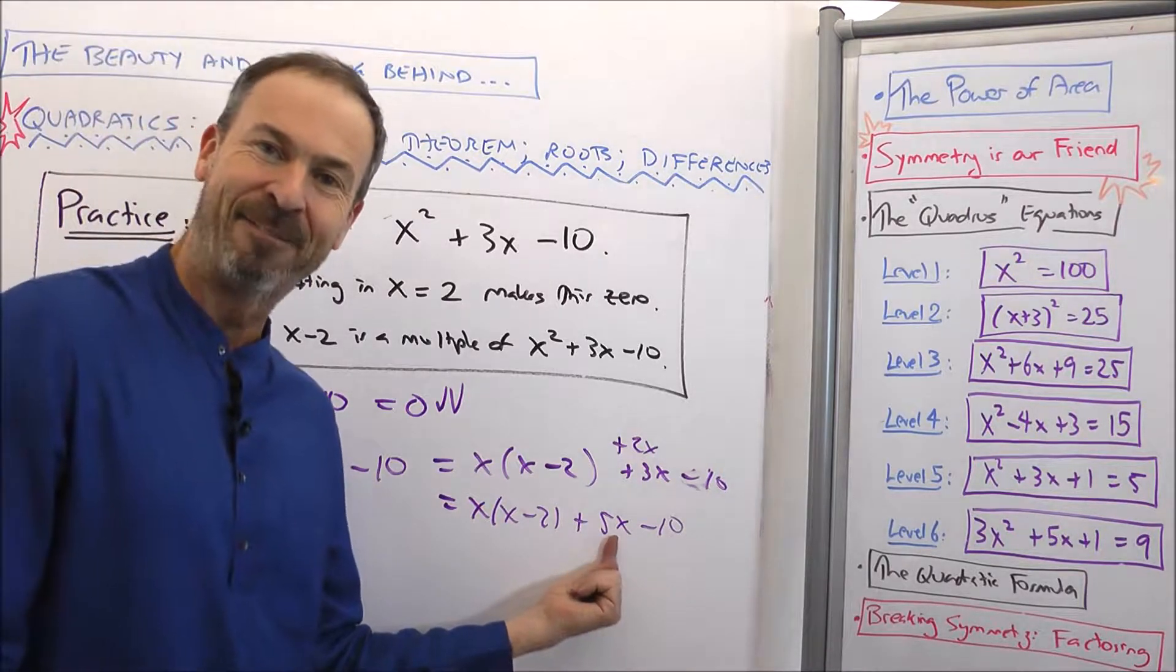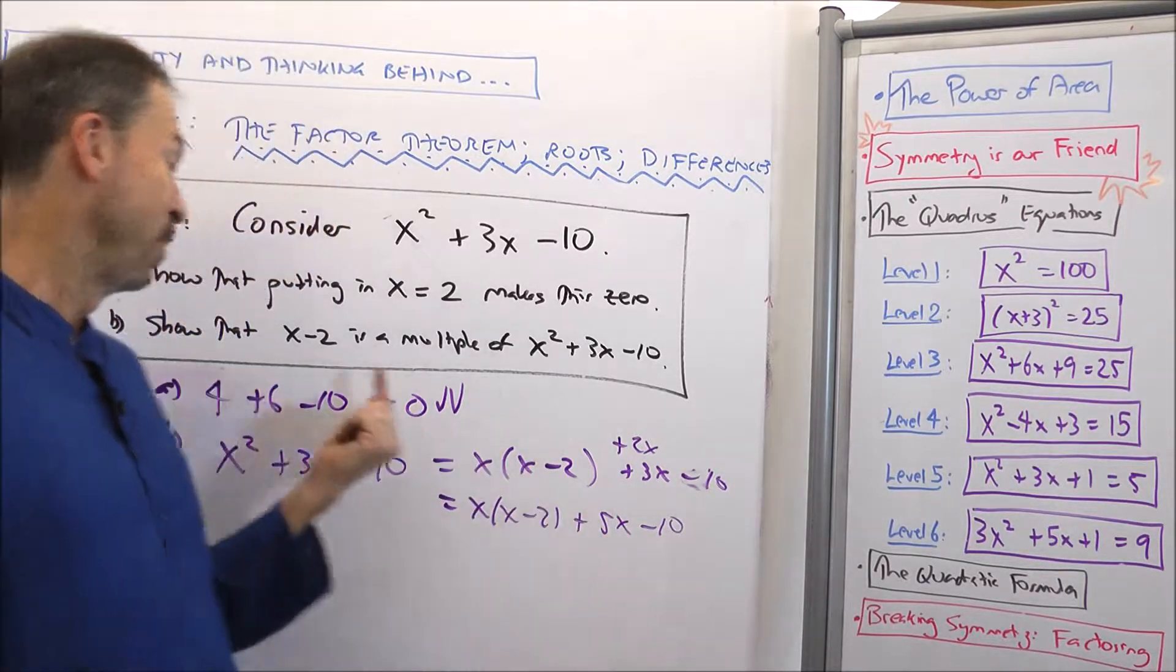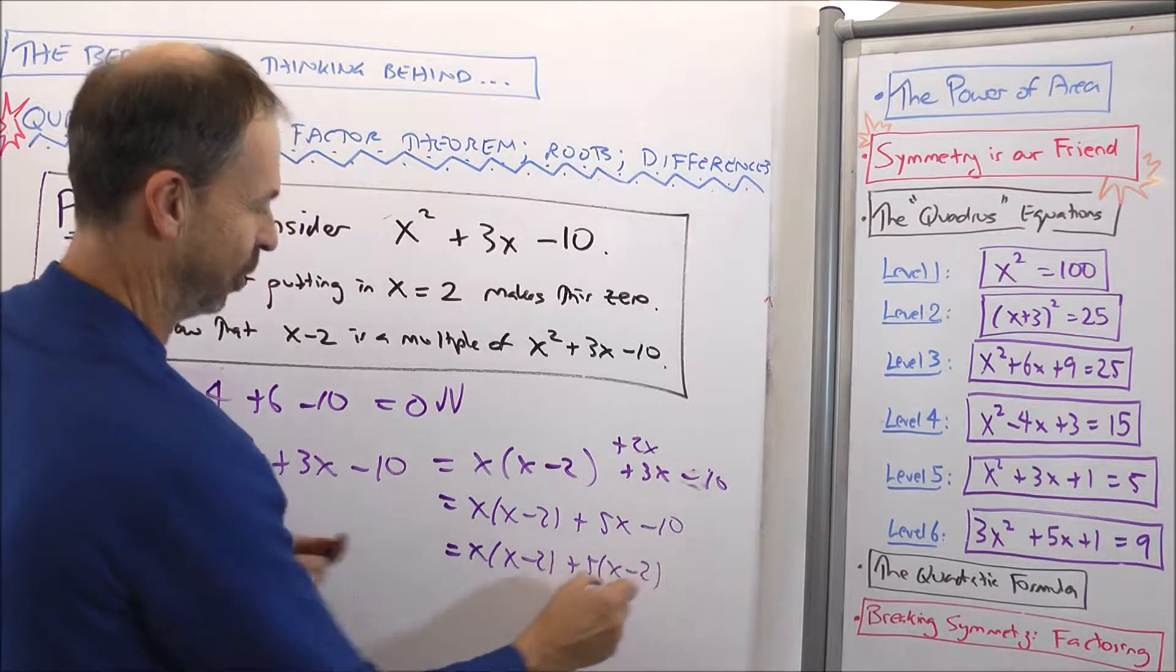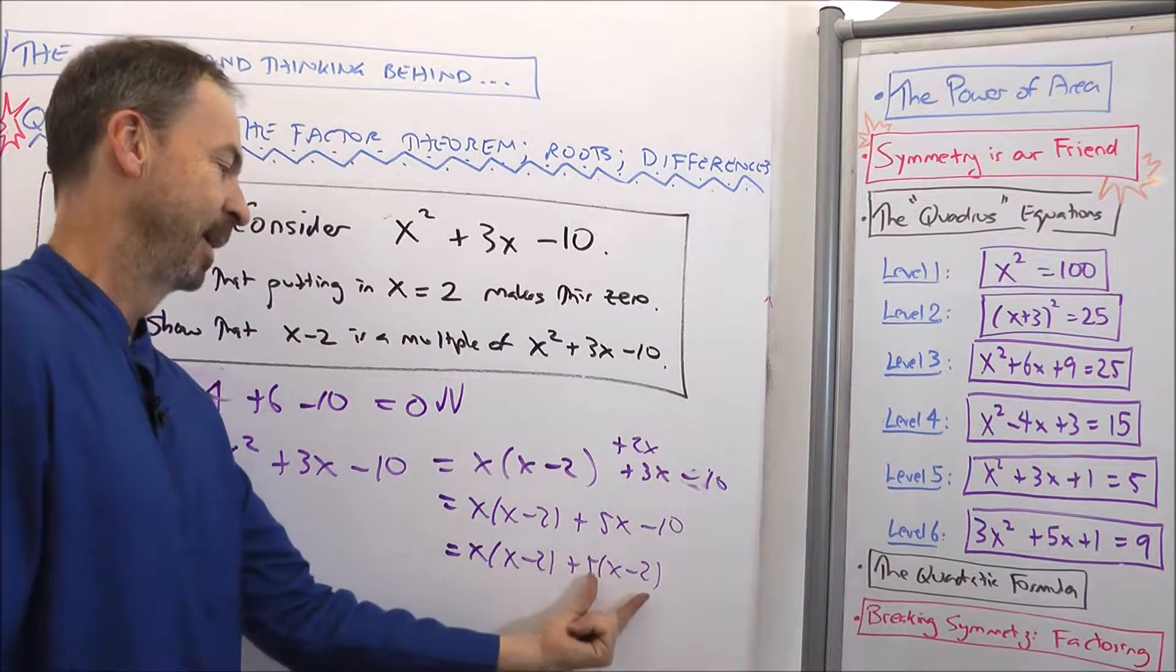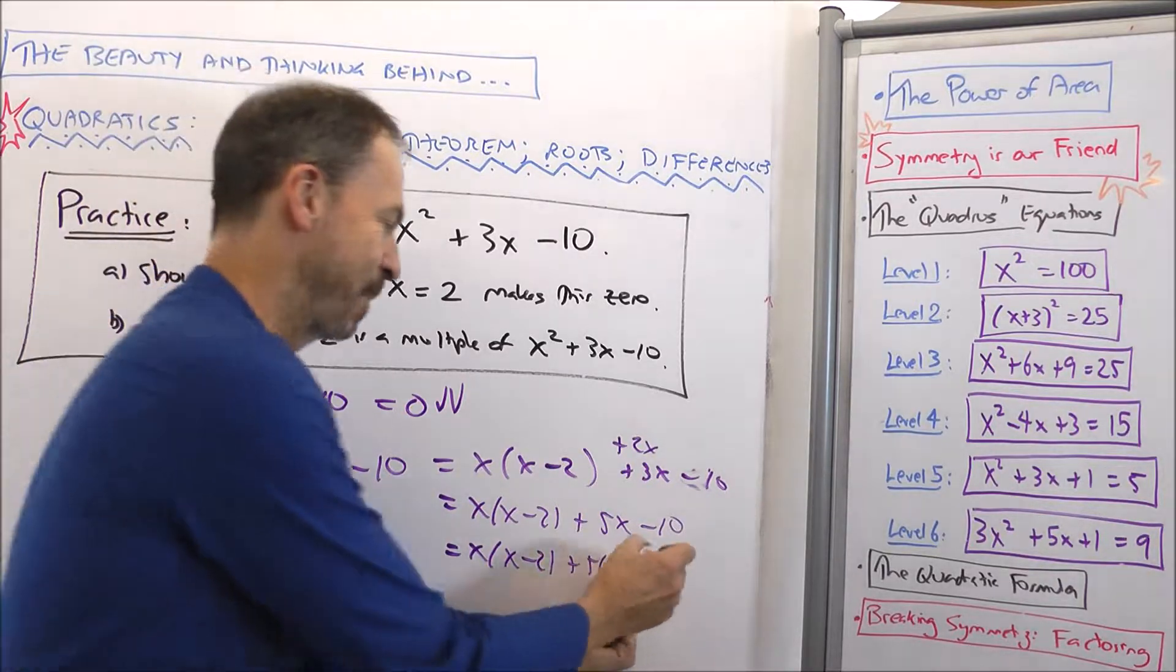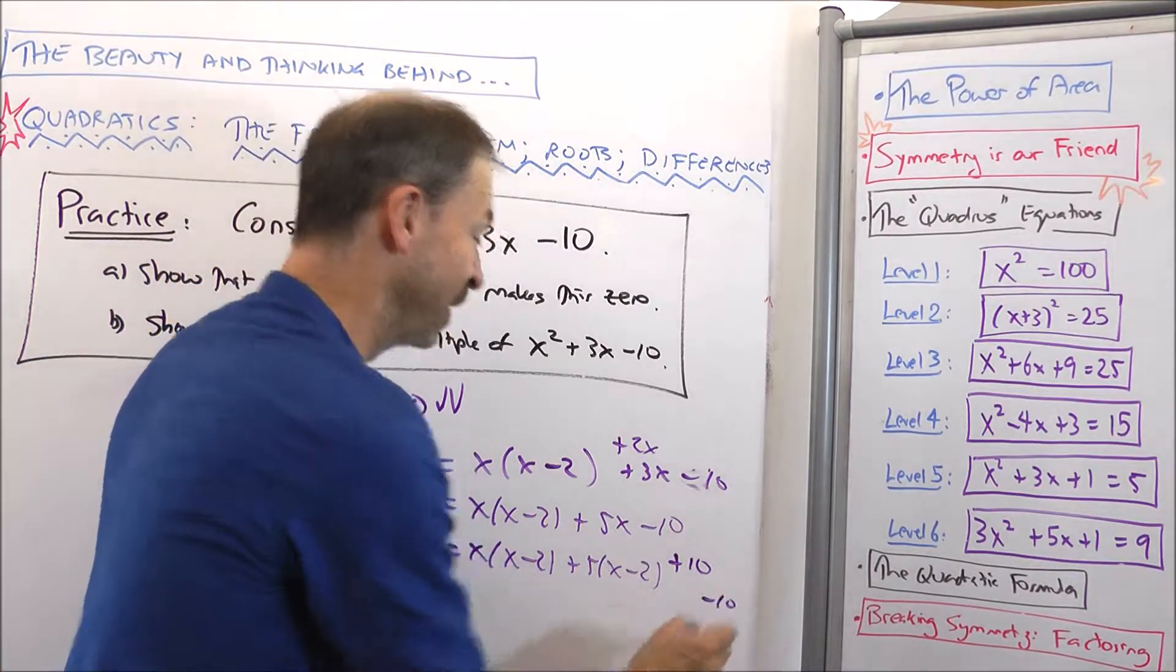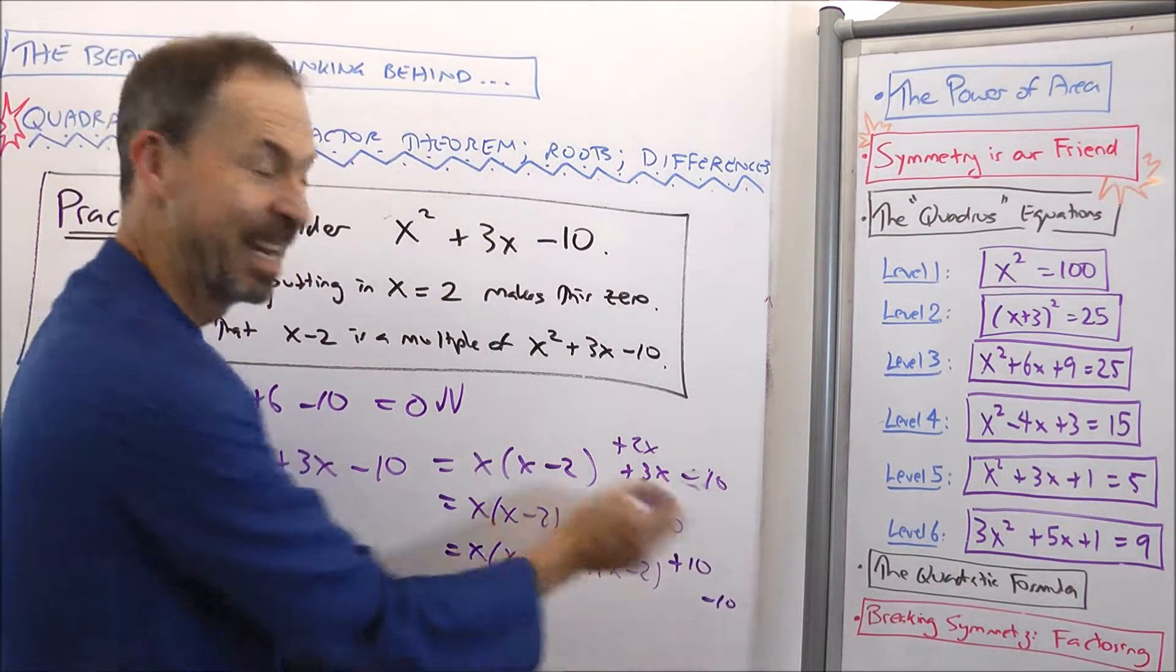Alright, that 5x is a multiple of x, but I want a multiple of x minus 2. Let's make it happen. (x minus 2) plus 5 times (x minus 2), 5x, yep, but I've introduced negative 10. I better counteract it with a positive 10. But I had a negative 10 all along floating around. So actually, 10 and negative 10 cancel.